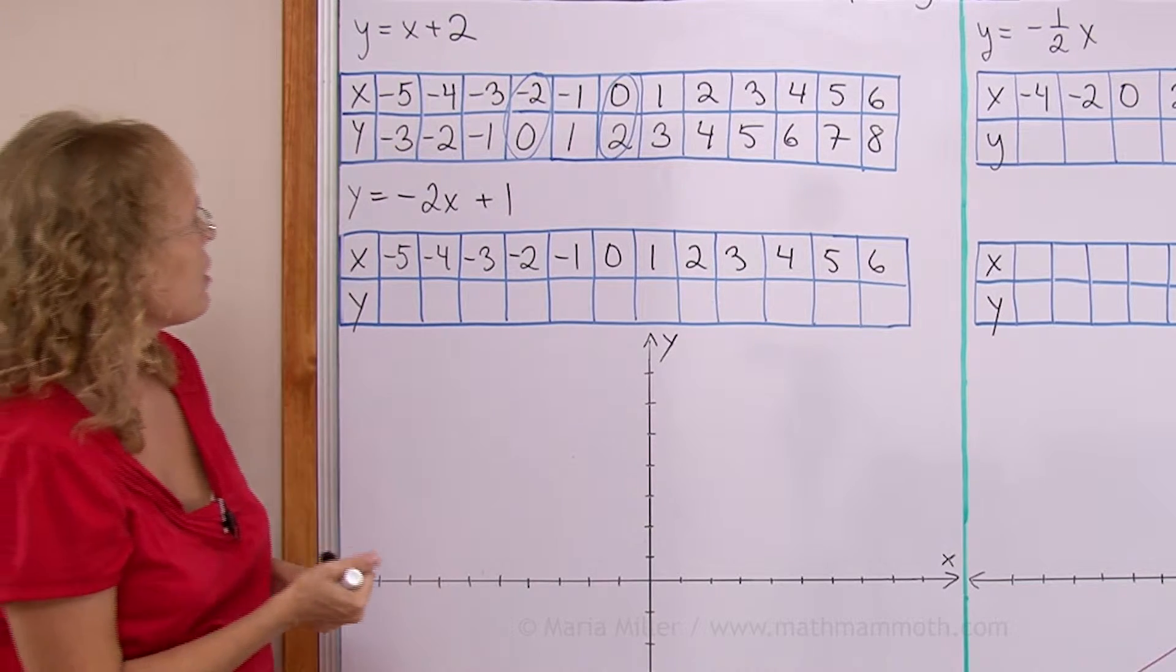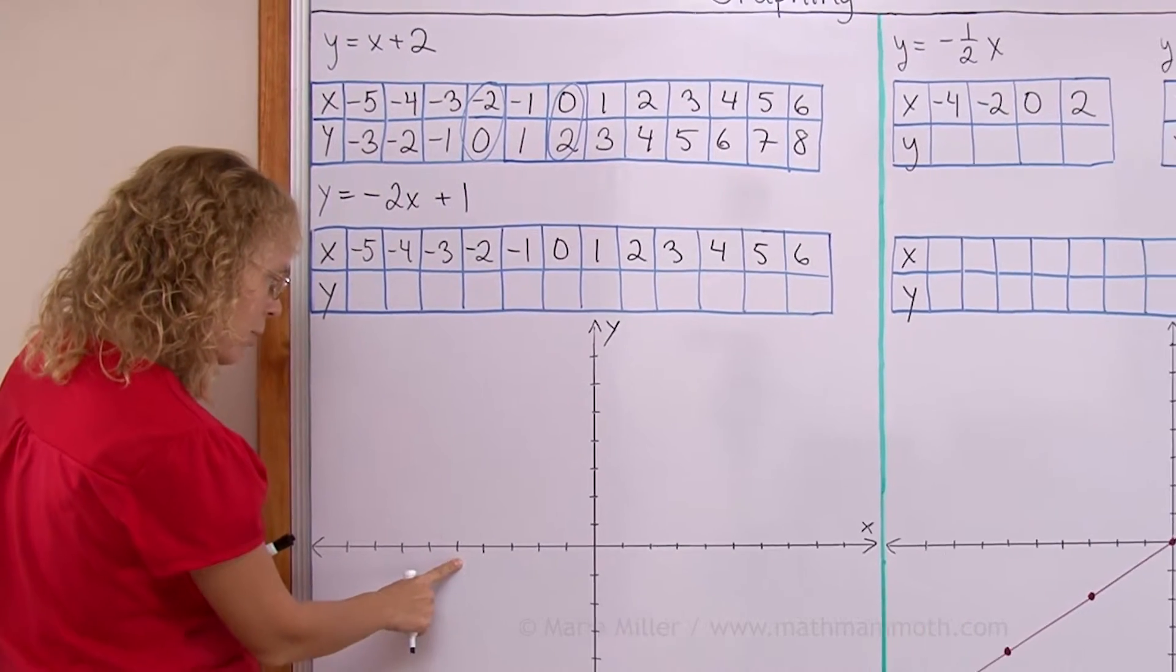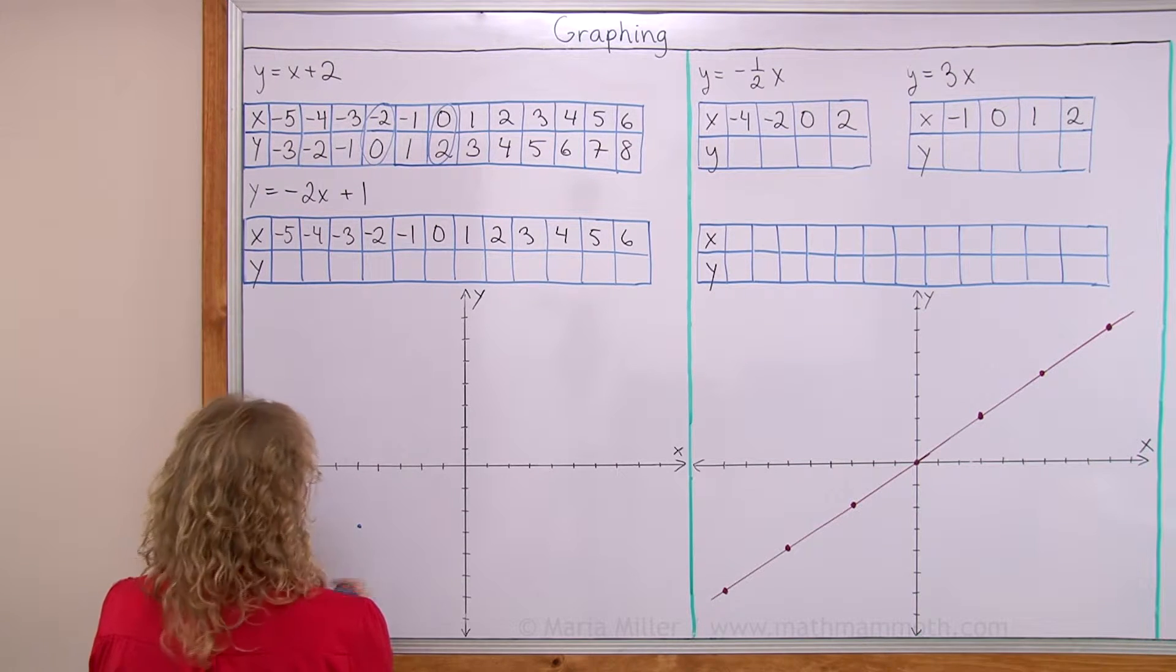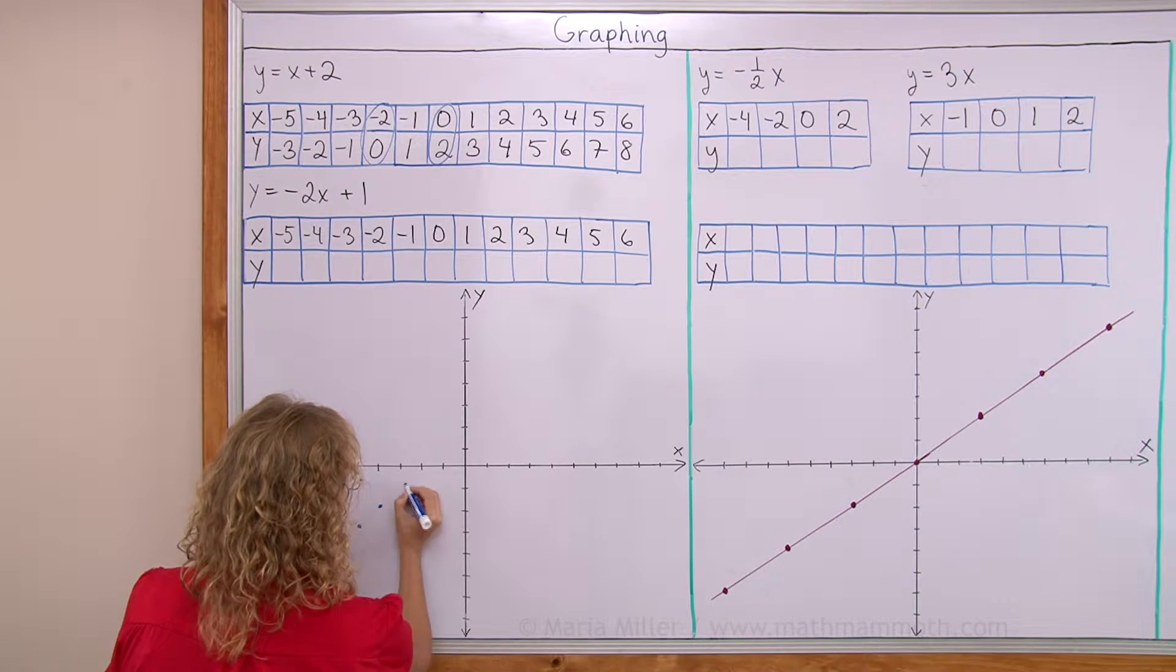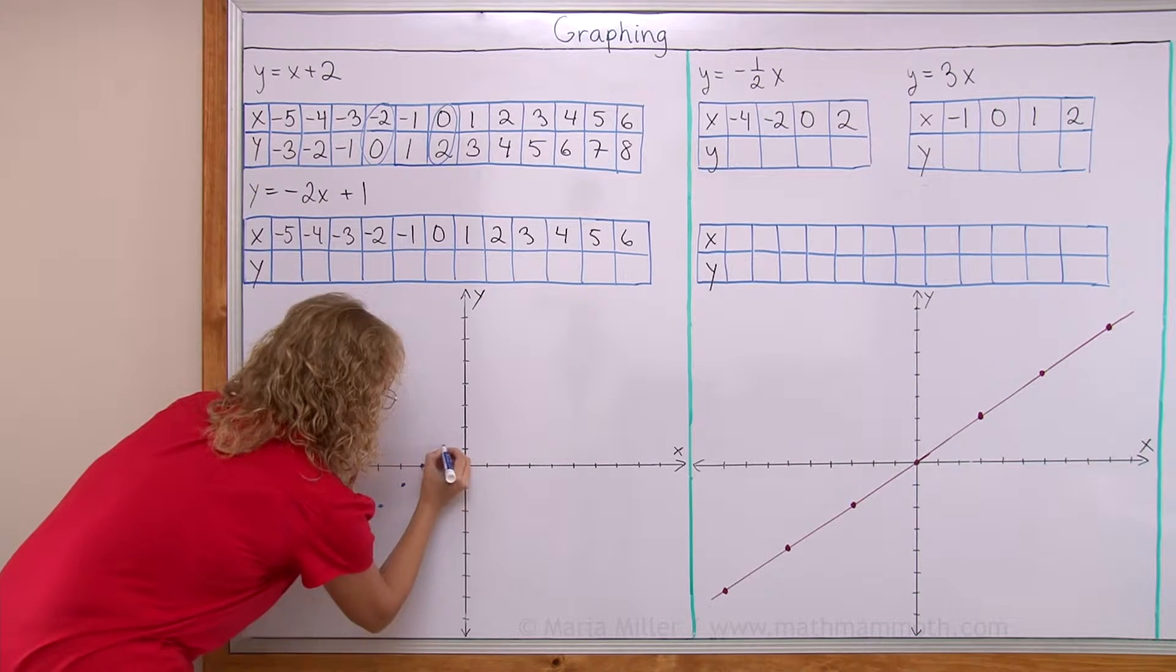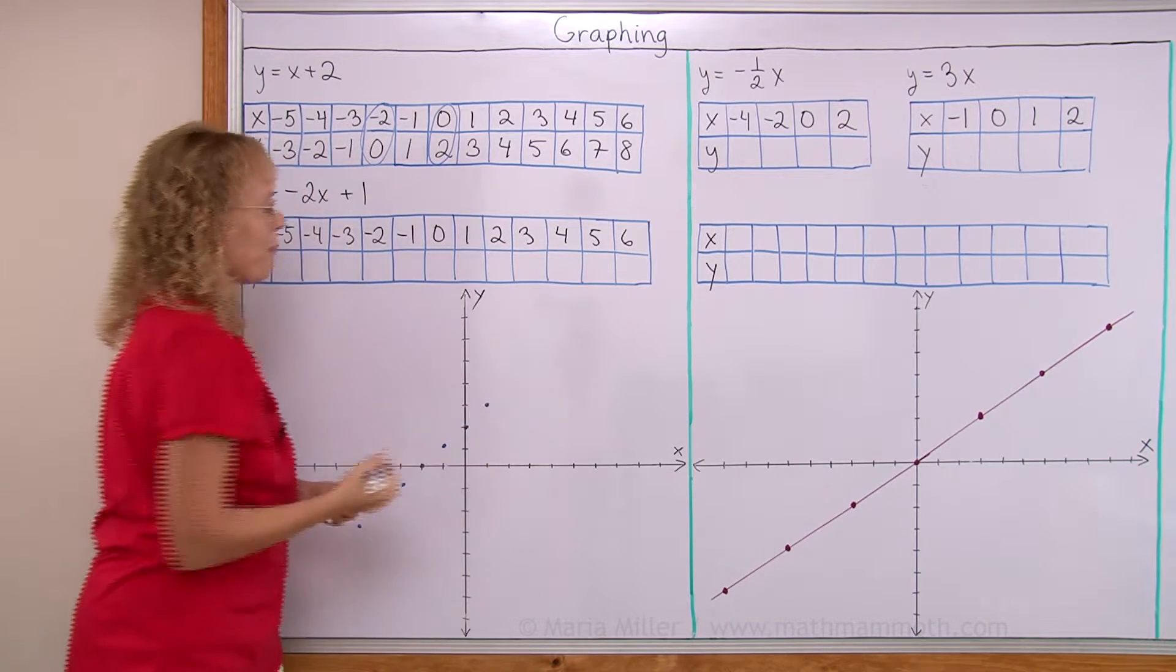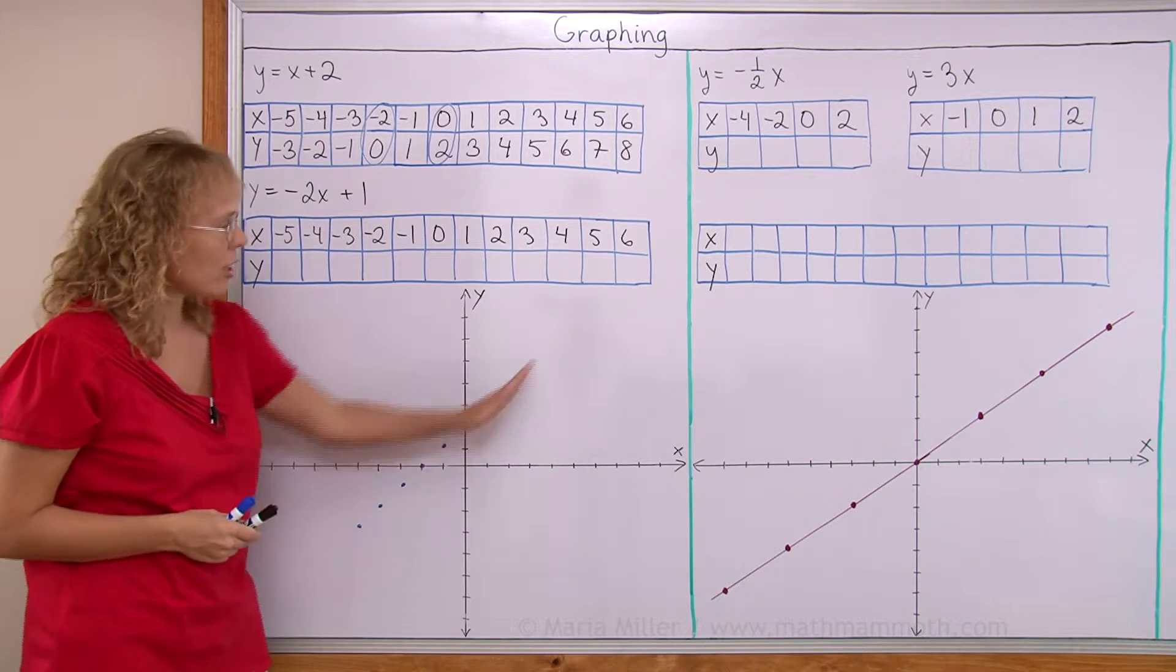Let's start here at negative 5, negative 3. X equals negative 5 would be this one, and y negative 3 somewhere here. Then negative 4, negative 2. Then negative 3, negative 1, and so on. 0, 2, 1, 3, and so on. You can see this would go in order.